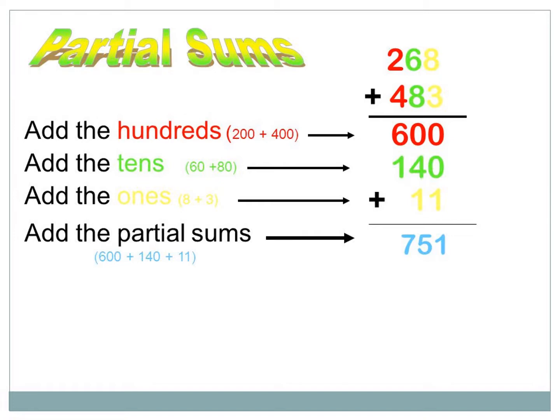200 plus 400 equals 600. Now add the tens. Check the tens in the two numbers. In the first one, the tens is 60. In the second number, the tens is 80. So we can say 60 plus 80 equals 140.